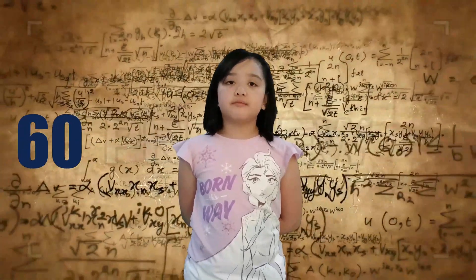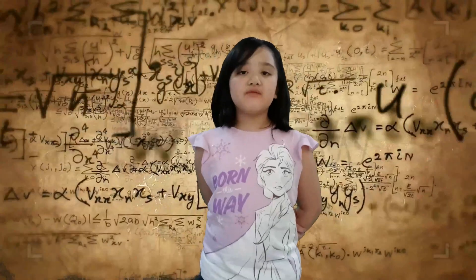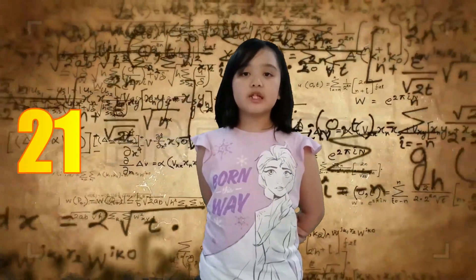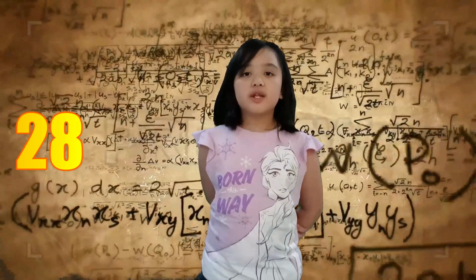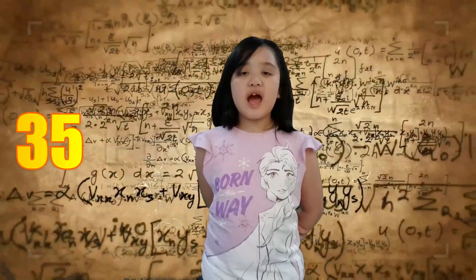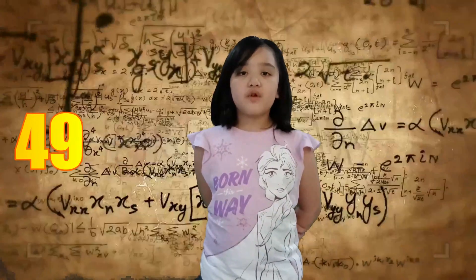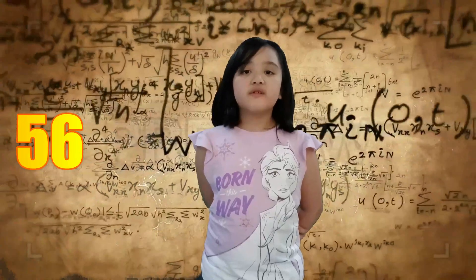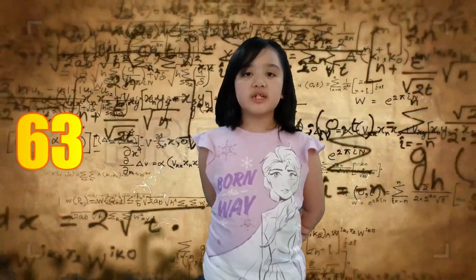and 60. Multiples of 7: 7, 14, 21, 28, 35, 42, 49, 56, 63, 70